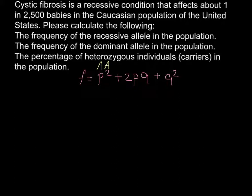Where p² stands for homozygous dominant, p is the dominant allele, q is the recessive allele, and q² stands for homozygous recessive. All this equals 1, and 1 equals 100%.